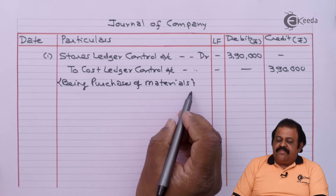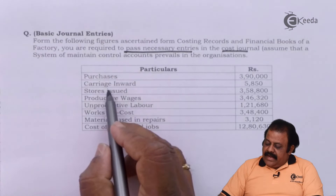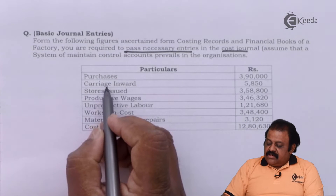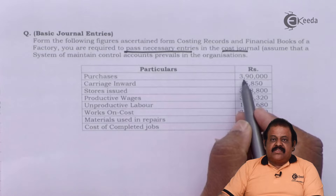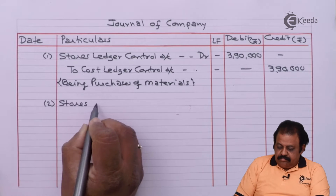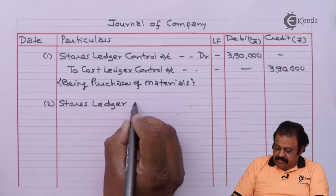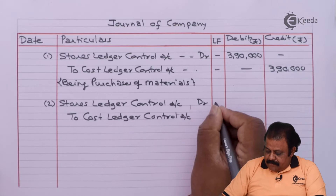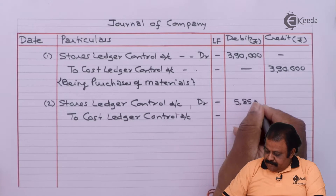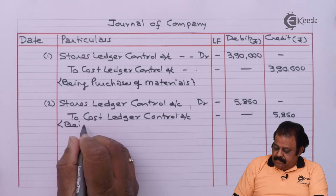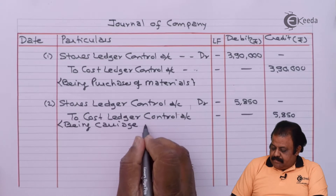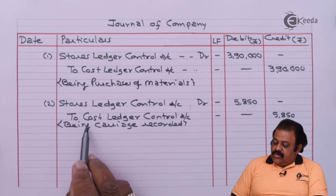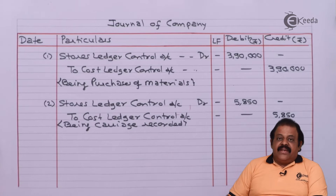Carriage inward 5,850 — this is a purchase expense and is required to be added to purchases. Entry: Stores Ledger Control Account debit 5,850 to Cost Ledger Control Account 5,850, being carriage inward recorded.